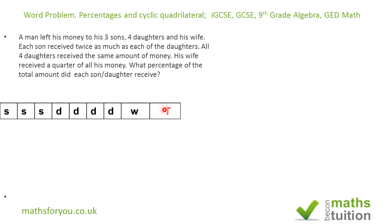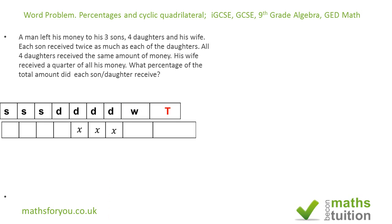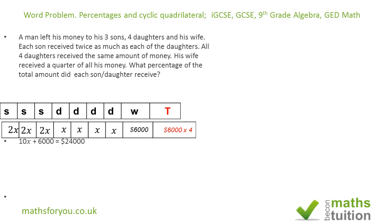If we say that each daughter received X dollars, then each son will receive 2X dollars. The wife receives $6,000 because that is a quarter of all his money, so the total would be 6,000 times 4, which is $24,000. Adding up: 2X + 2X = 4X, then 6X, 7X, 8X, 9X, 10X, plus six thousand equals twenty-four thousand dollars.